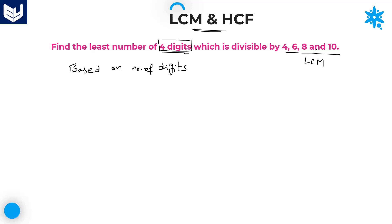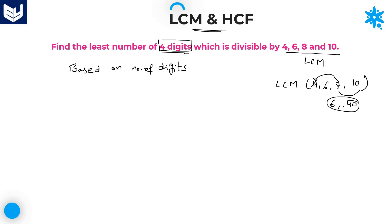Whatever the numbers which are given in the problem, we need to calculate the LCM — that is LCM of 4, 6, 8, and 10. Here, LCM of 4 and 8 is 8, and next 8 and 10 is equal to 40. Now you can calculate LCM of 6 and 40. If you take the multiples of 40: 40 is not divisible by 6, 80 is not divisible by 6, but 120 is divisible by 6.